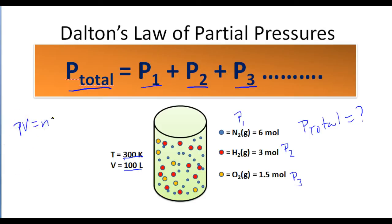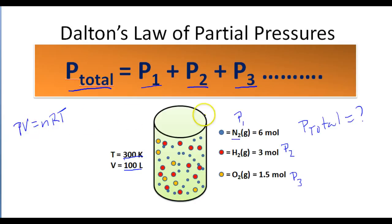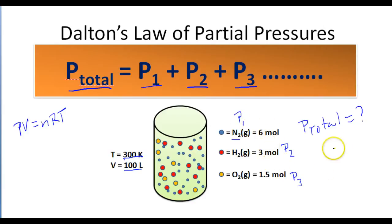If you take a look at the video that precedes this, we talk about the ideal gas law: PV equals NRT. In this problem, if we wanted to calculate the pressure of the nitrogen, the volume is 100 liters, the temperature is 300 K, the number of moles is six, and R is the universal gas law constant. We solve for P to get the pressure of each gas, then add those values to get the total pressure.